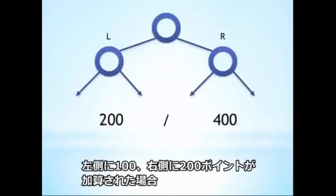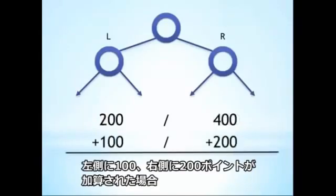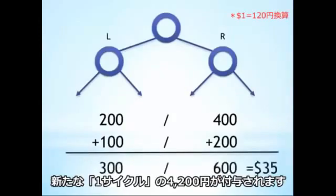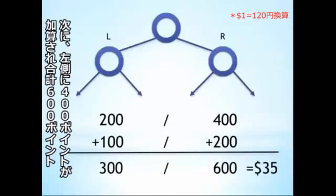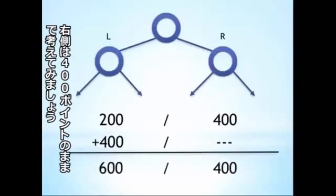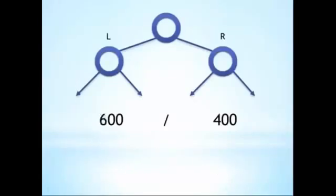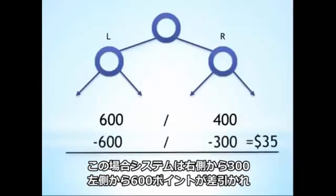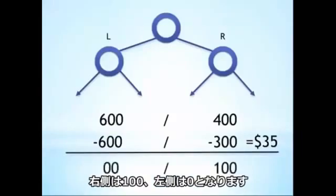As soon as 100 more points are accumulated on the left side and 200 more on the right, an additional cycle will occur. Another possible scenario is for 400 more points to accumulate on the left side, leaving the tree with 600 on the left and 400 on the right. In this case, the computer would subtract 300 from the right side and 600 from the left, leaving the tree with 100 points on the right and zero on the left.